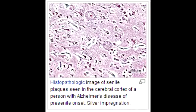Name the altered protein and its respective chromosome that leads to late onset Alzheimer's disease. The altered protein that leads to late onset Alzheimer's disease is apolipoprotein E4, located on chromosome 19. Apolipoprotein E2 is protective against Alzheimer's disease, and it is also located on chromosome 19.